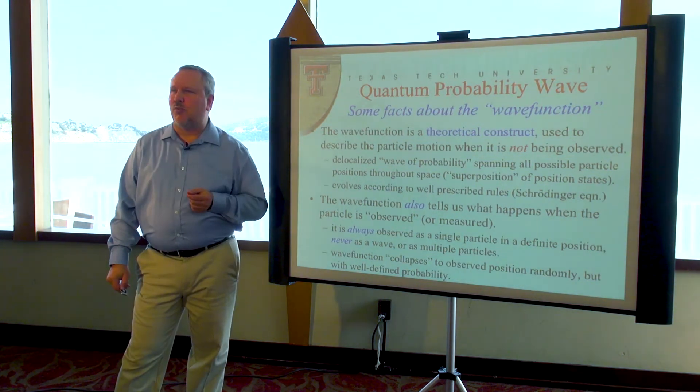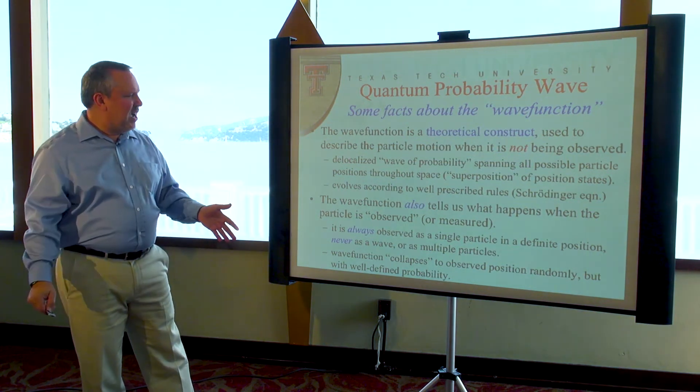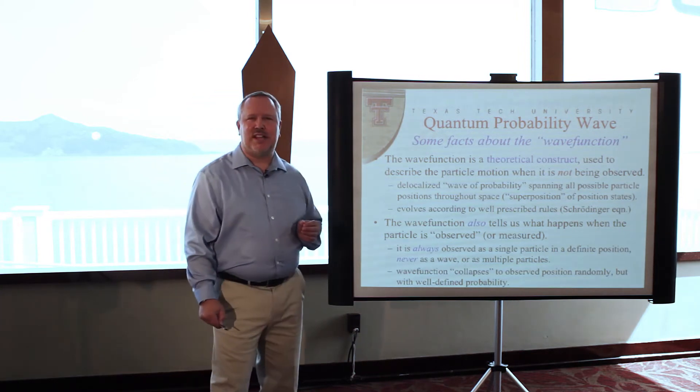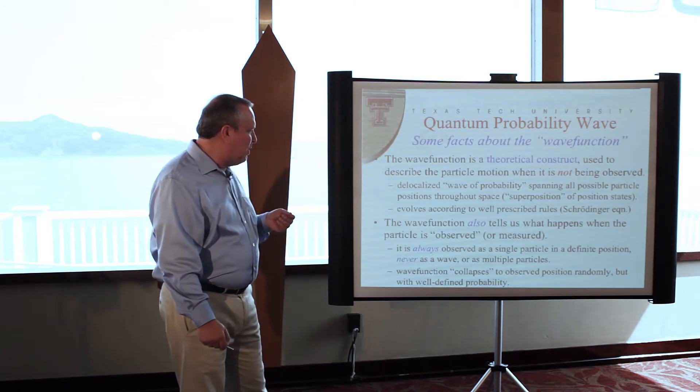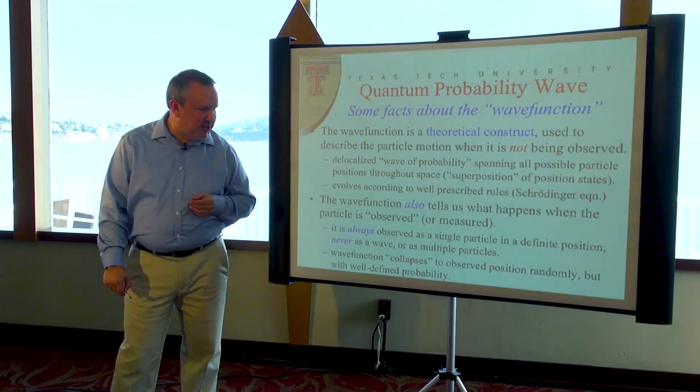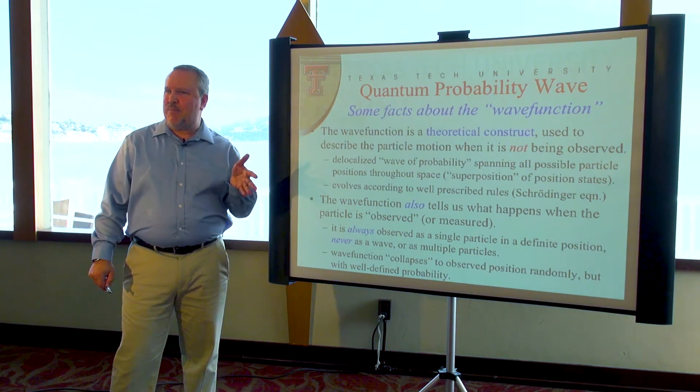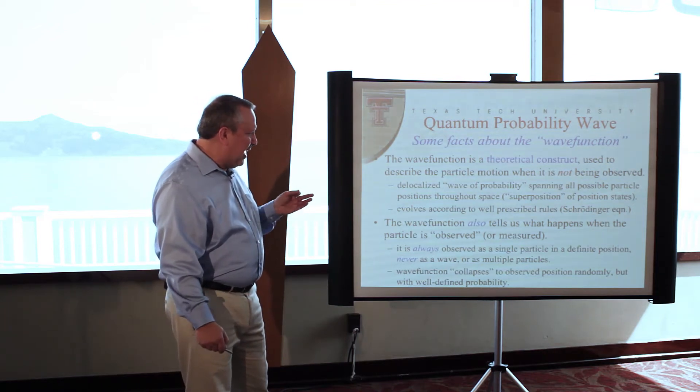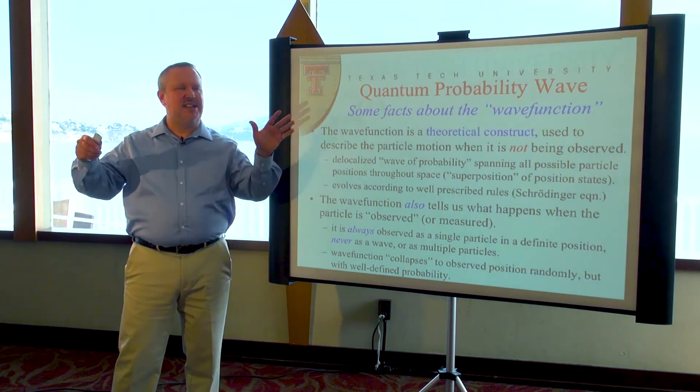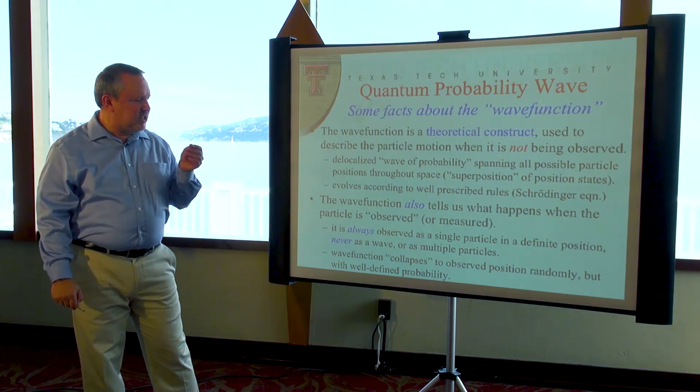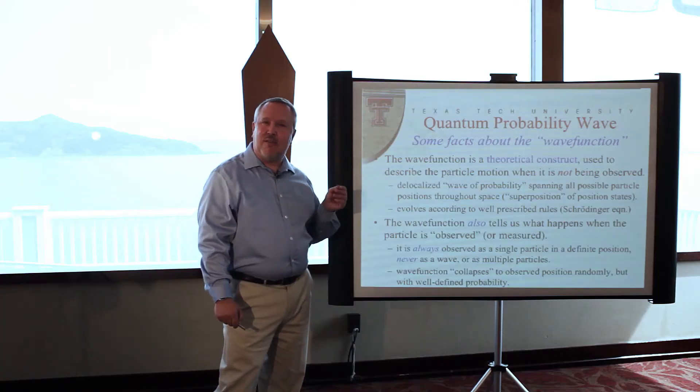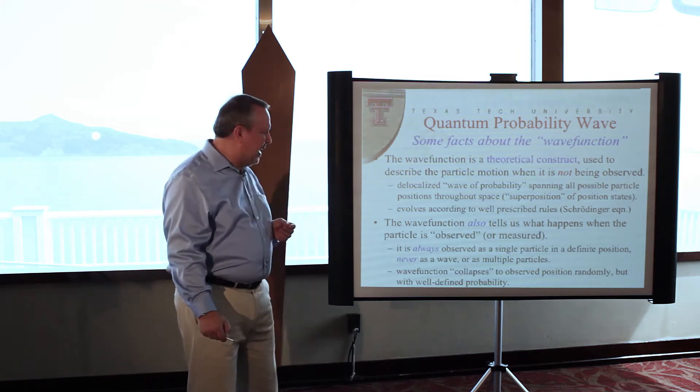Now the wave function actually plays a kind of a double role. It tells us what happens when we're not looking at a quantum object, but it also gets used in a very different way to tell us what happens when we do look at a quantum object. When we look at a quantum object, when we measure its position, it always appears as a particle. It always appears in a very definite position. We never see multiple particles or a wave. So this is a process that's known as wave function collapse. This process is very different from the first process. The first process is a smooth, continuous, flowing wave like a fluid. This second process is something that's discrete, it's very sudden, and it's also random. It's not deterministic. One can't predict in advance what outcome one will obtain. However, one can predict very accurately what the probabilities are that any given outcome will be observed.